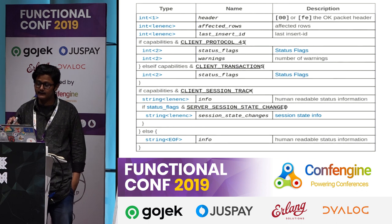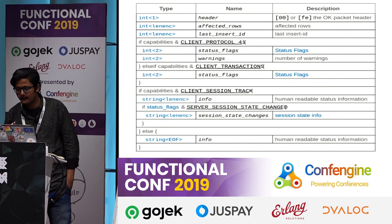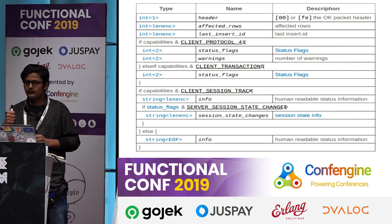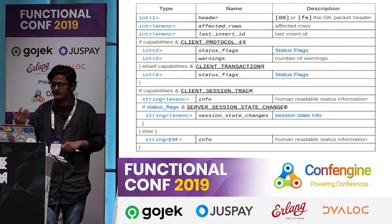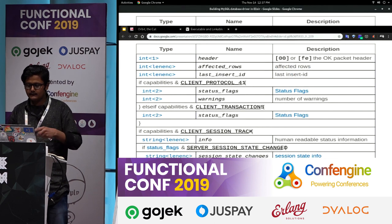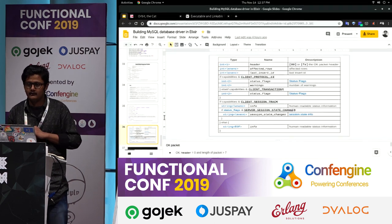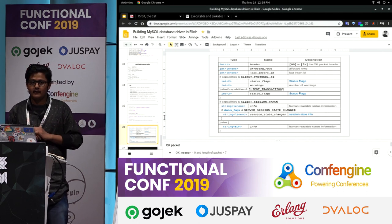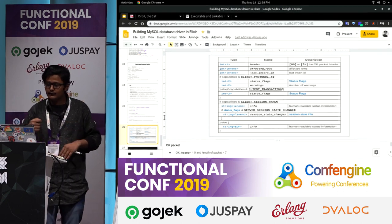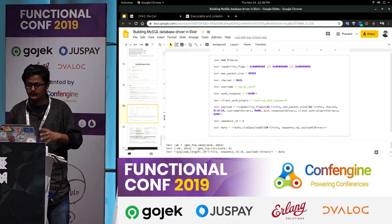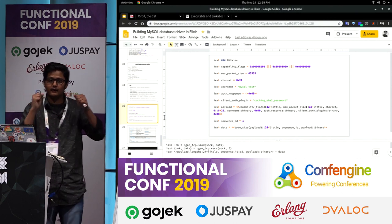The OK packet has a header describing success — zero for success — and all affected rows, last inserted IDs, and other such information. So this is the structure of an OK packet. Similarly, with the OK packet we can have different types of packets — for example if you want to send a command like SELECT *, you use different packet types using the same basic ideas I've presented: binary pattern matching, encode it, and send it over the wire.